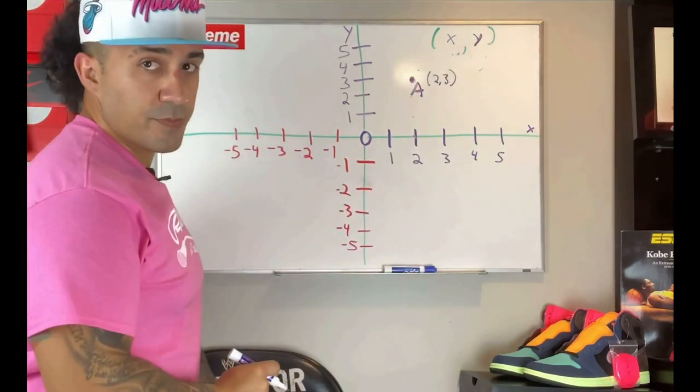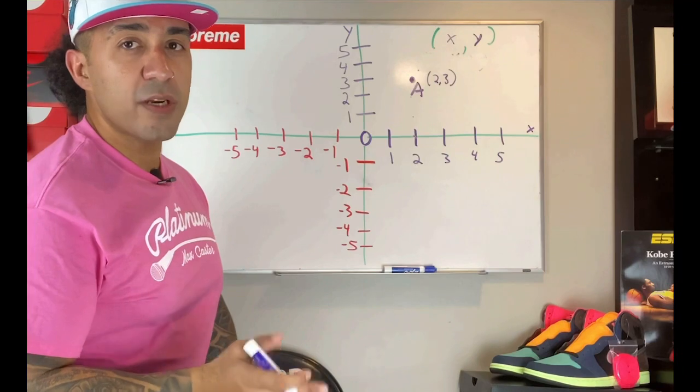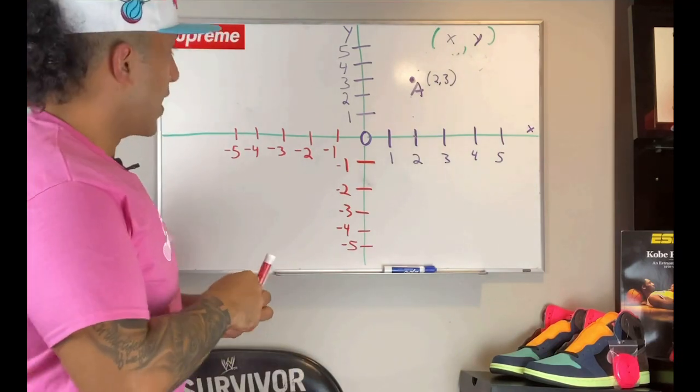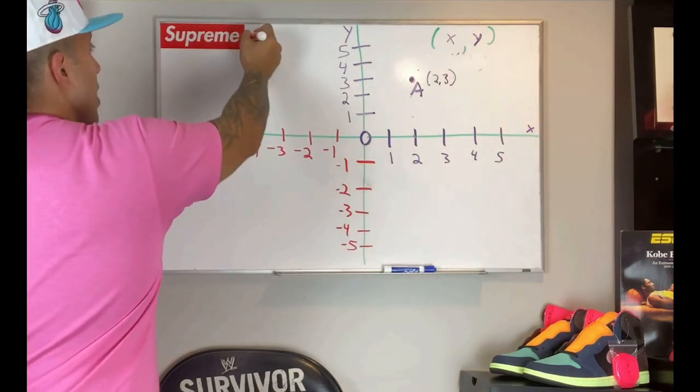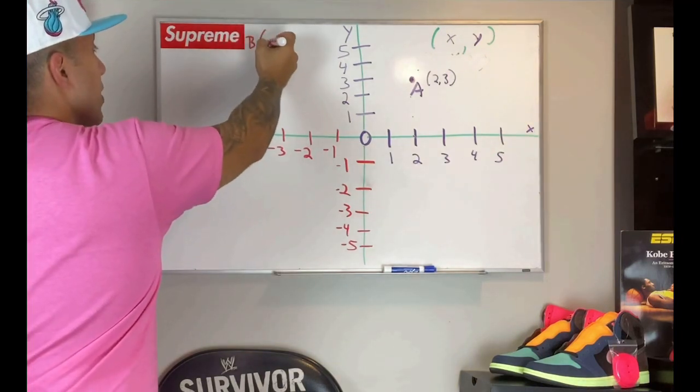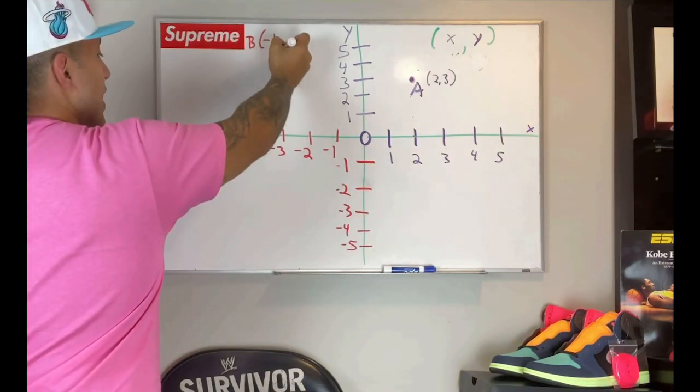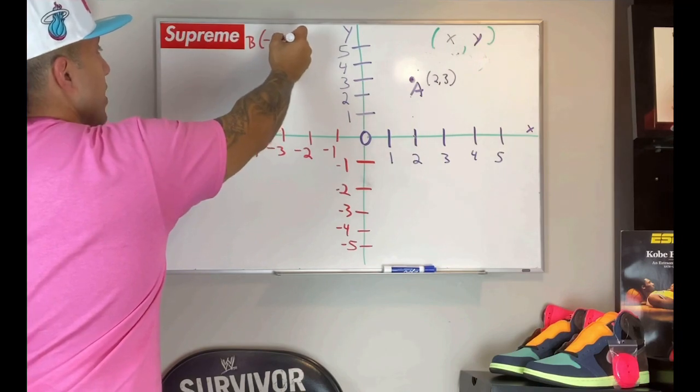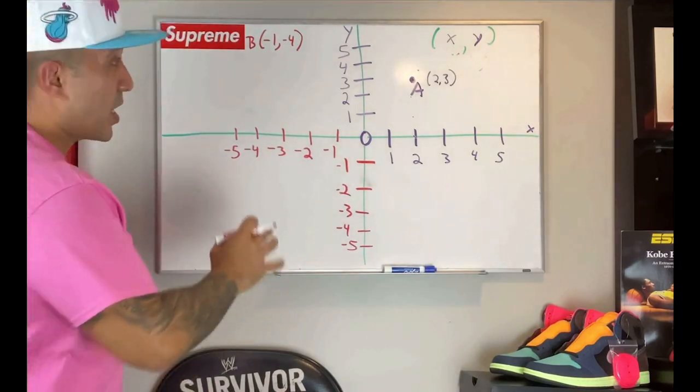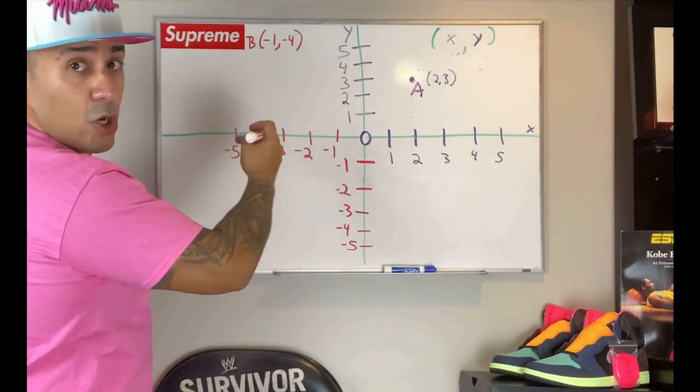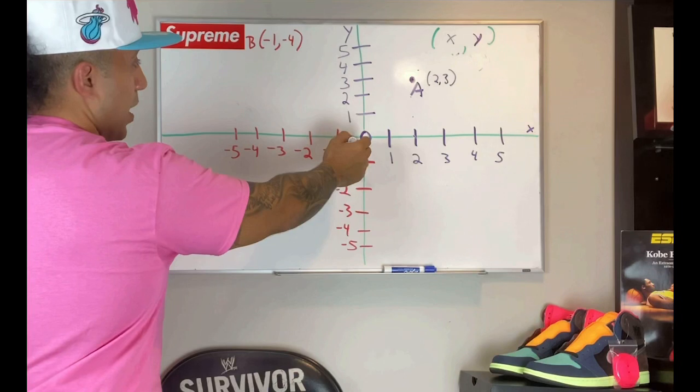gonna put A. Now we're gonna do one with negatives just so we are familiar with it. And we're gonna use B. Alright, now we're gonna go B, and we're gonna use the ordered pair, let's go (-1, -4). I'm gonna start on my origin again. Now because that 1 is negative, we go to the left, and I'm only gonna